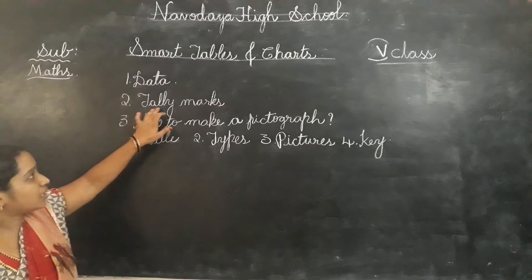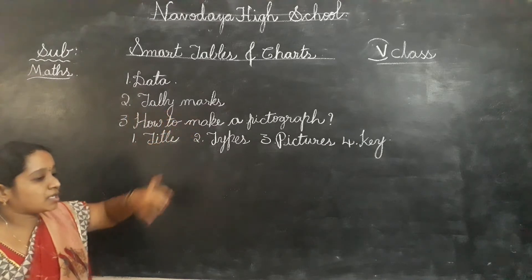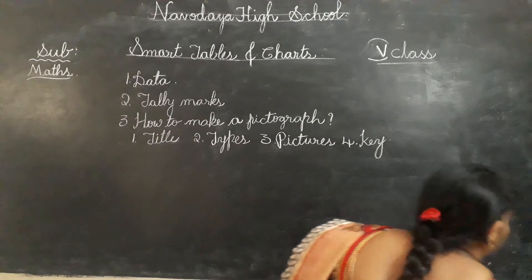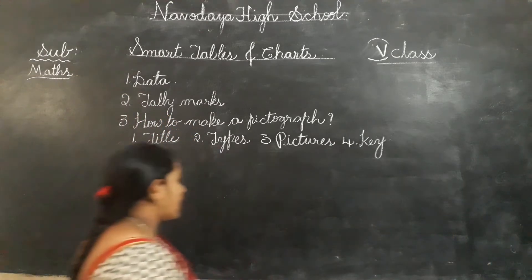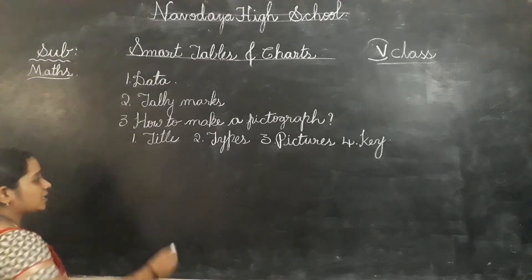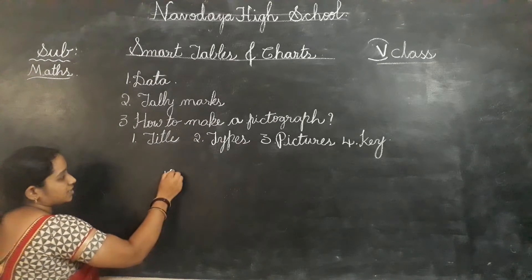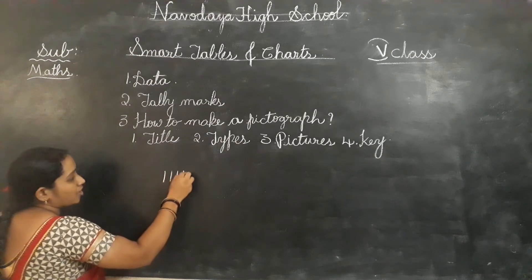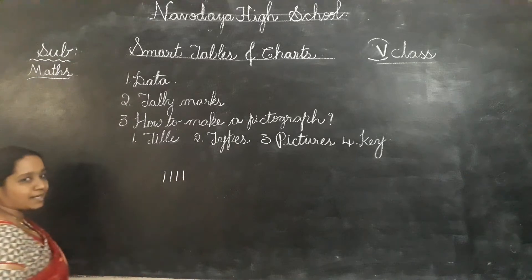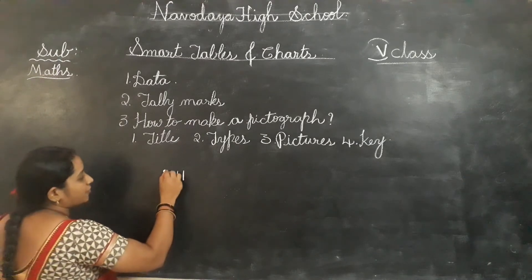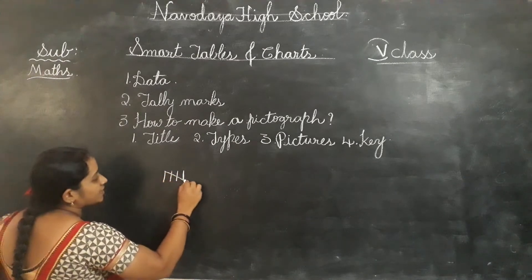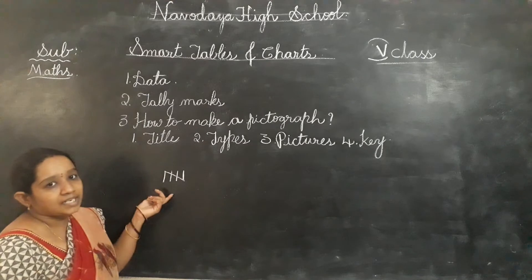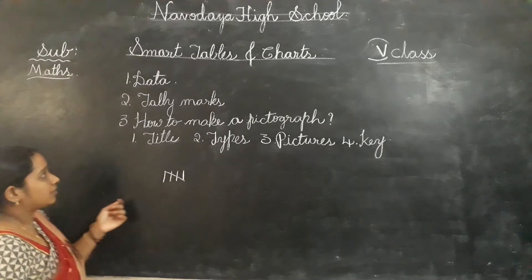Next, what are tally marks? Tally marks are like this: four standing lines and the fifth one is a slanting line. These are called tally marks, children.